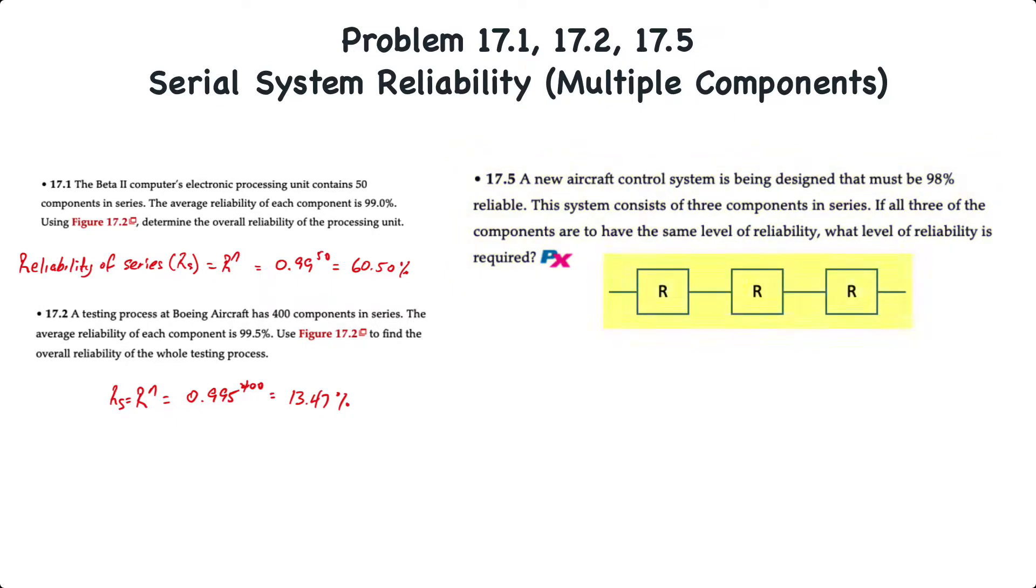So what we have is a series that looks like this. We have three components, but we don't know what the reliability of each one is. We do know that the overall reliability of the system is 98%. And if each one has the same reliability, then r times r times r, or r cubed, is equal to 98% or 0.98.